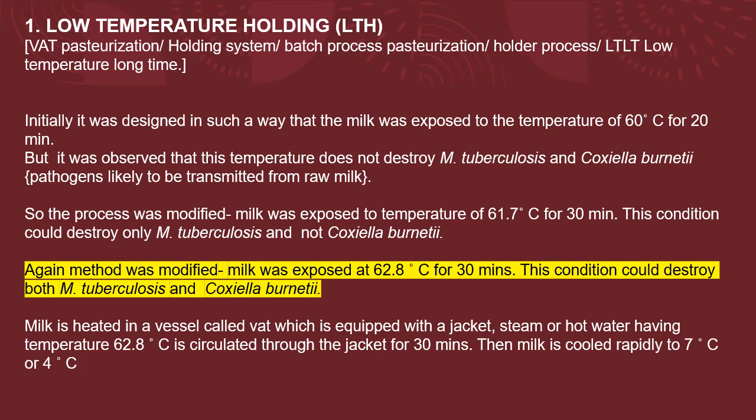Initially, LTH was designed so that milk was exposed to a temperature of 60°C for 20 minutes. However, it was observed that this temperature does not destroy Mycobacterium tuberculosis and Coxiella burnetii — pathogens likely to be transmitted from raw milk. So the process was modified and milk was exposed to 61.7°C for 30 minutes, increasing both temperature and time.